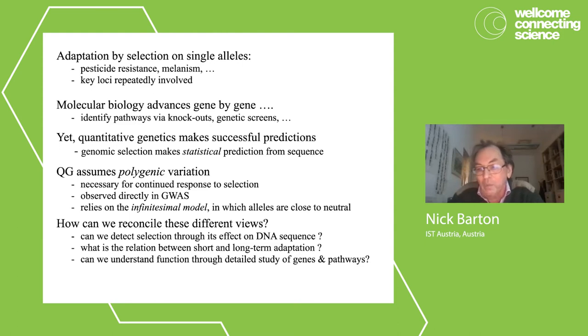Can we relate short-term evolution to long-term adaptation? In other words, we study populations over tens or hundreds of generations in the lab or in short-term field studies, and we think we understand what's happening there. But our viewpoint is very different from what we look at when we compare species, where we identify substitutions at very large numbers of sites. What is the relation between these two? How can we connect them?